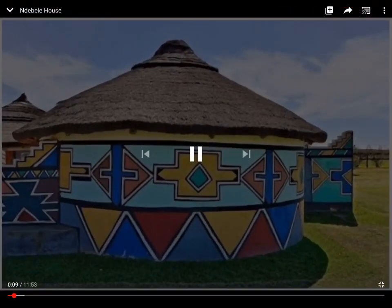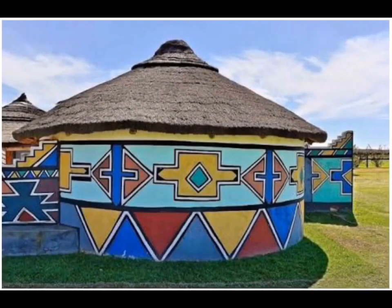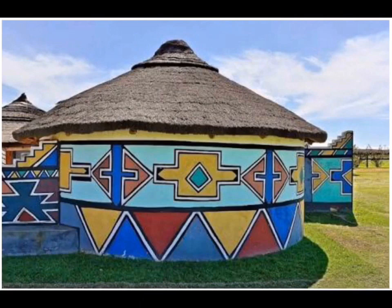Now the Ndebele people are a South African tribe that loved to create houses with all these beautiful bright patterns on them. They were mud-walled houses and they started making these patterns mid 18th century. All these patterns are actually expressive symbols that were used to communicate between their tribes and different groups within the Ndebele people. These patterns were actually a secret code that they like to use.